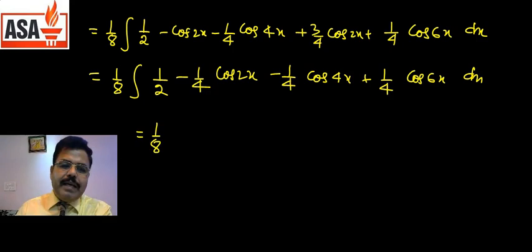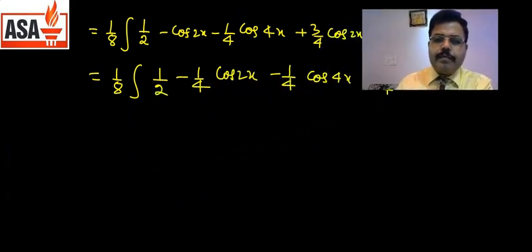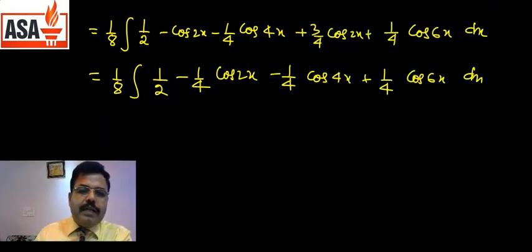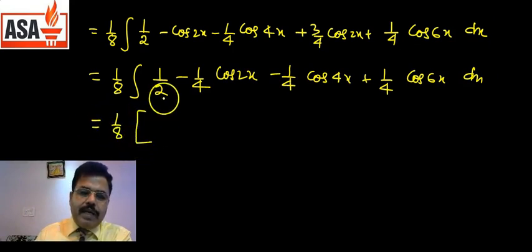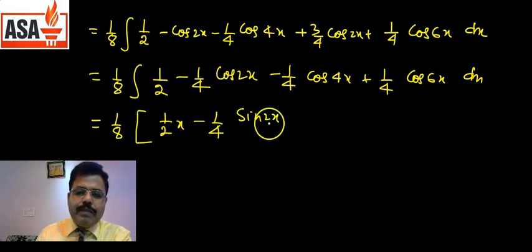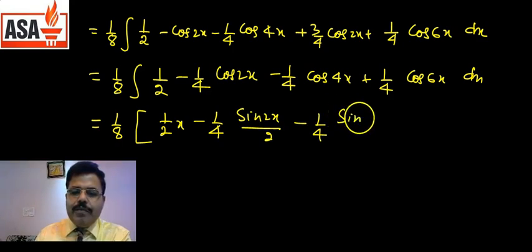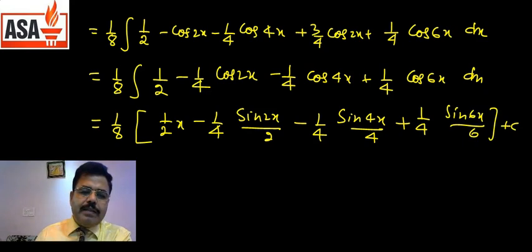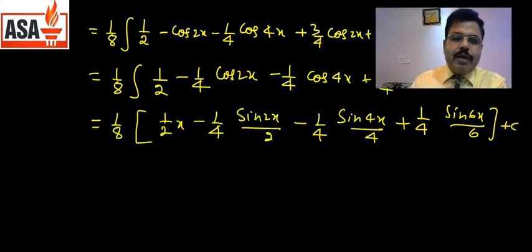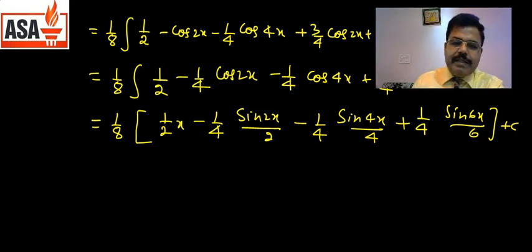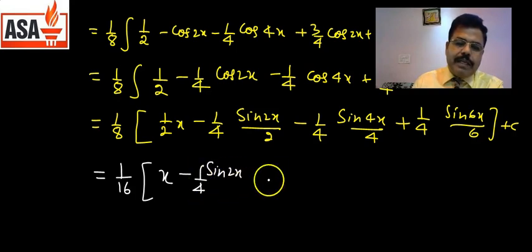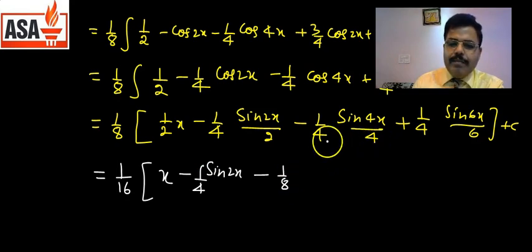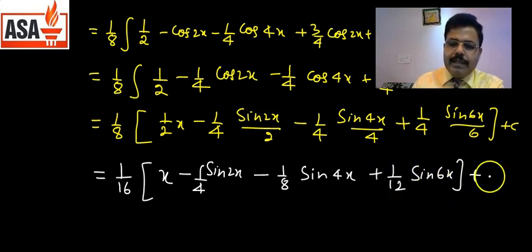Final answer after multiplying by 1/8 and simplifying: 1/16 × x − (1/4)sin2x − (1/16)sin4x + (1/12)sin6x + c। Taking 2 common: 1/16 [x − (1/4)sin2x − (1/8)sin4x + (1/12)sin6x] + c। This is the final answer for ∫sin⁴x·cos²x dx।